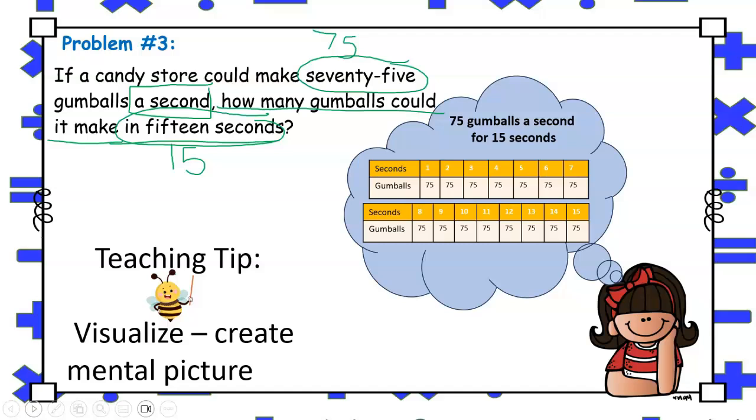The expression a second can also be substituted with every or each. So again, we can see that something is being grouped. Every second, 75 gumballs are made, and that is being repeated 15 times. And some students may make the connection that repeated addition can be used. However, to solve for this problem more efficiently, multiplication would be the best operation.